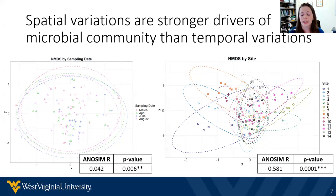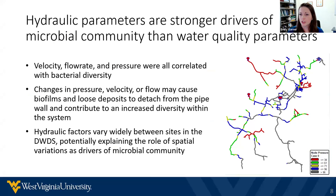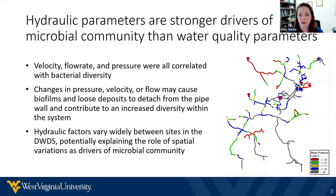There's a lot of literature showing that water quality is a really important driver of microbial communities. But we were surprised to find that when we did hydraulic modeling of this distribution system and combined that with all our water quality data, hydraulic drivers were much stronger predictors of microbial community than any of our water quality parameters. Things like velocity, flow rate, and pressure were all correlated with bacterial diversity. We believe hydraulic changes out in the system can contribute to biofilms on the inside of pipes sloughing off and entering the water we're detecting.